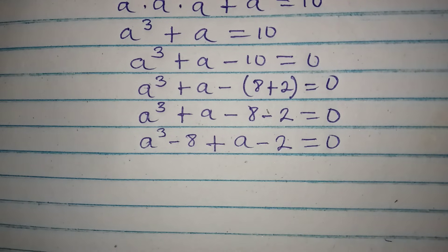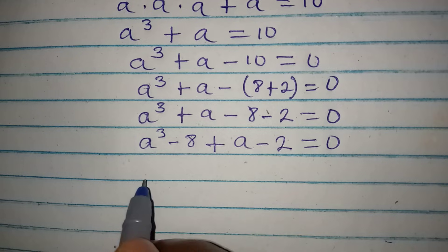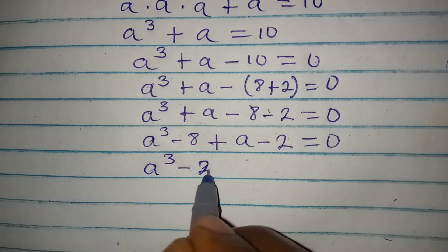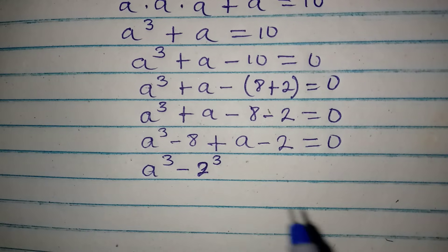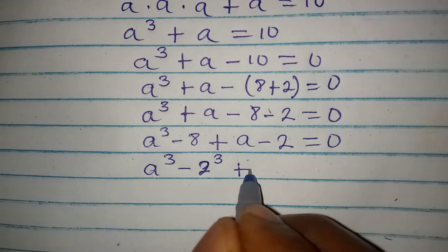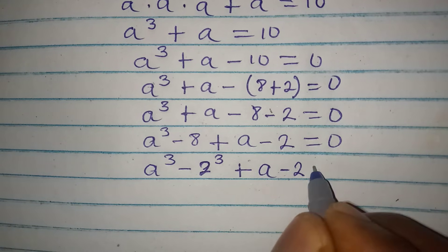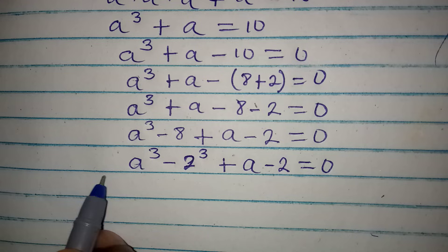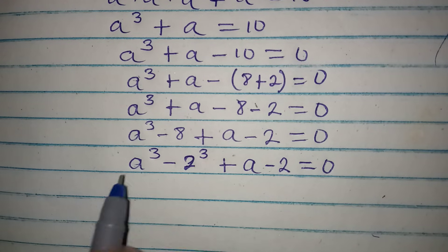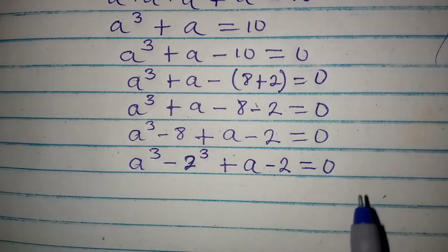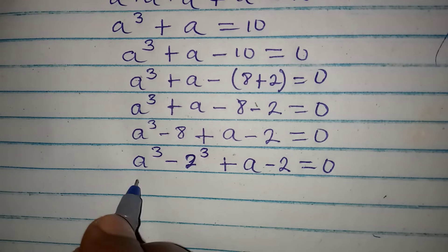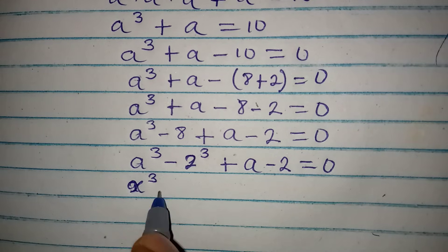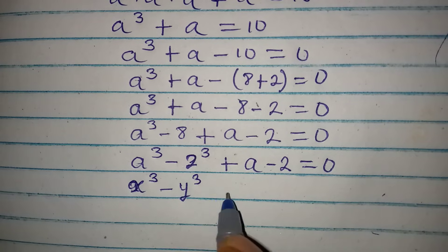We have a³ - 2³, because 8 is 2 to the power of 3, plus a - 2, equal to 0. Remember, our intention is to make sure we have the same power in each group. Now, recall that x³ - y³ equals x minus y multiplied by x squared...